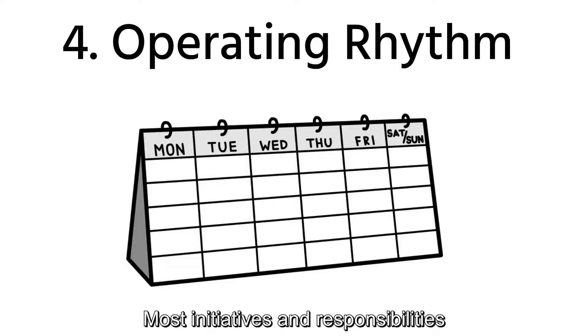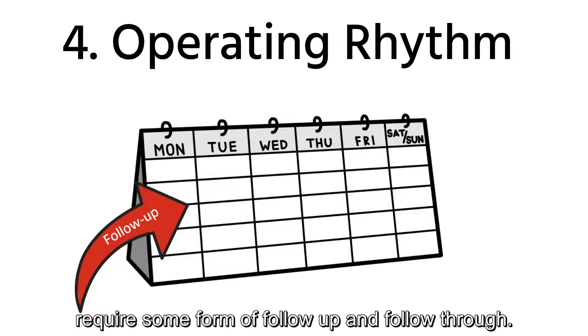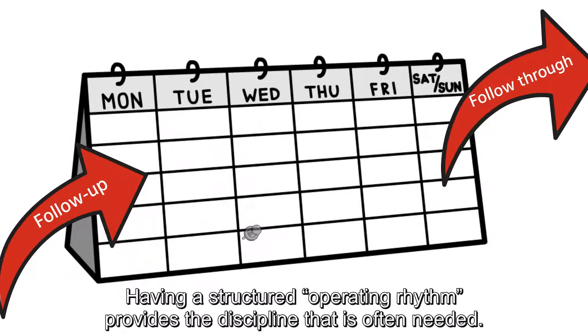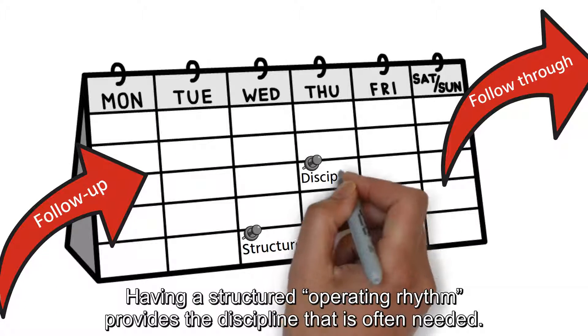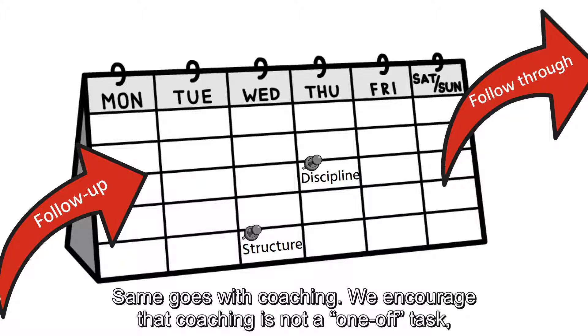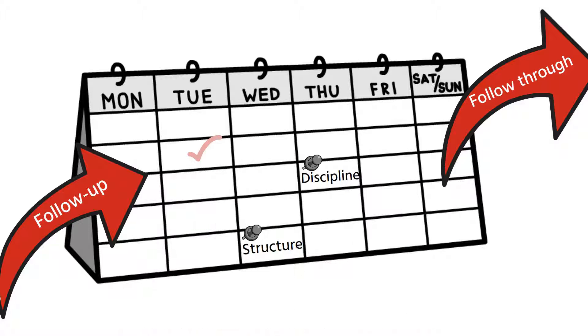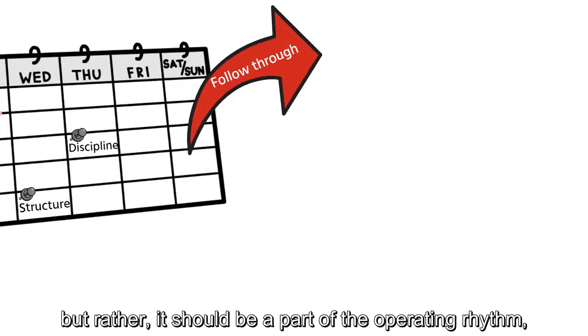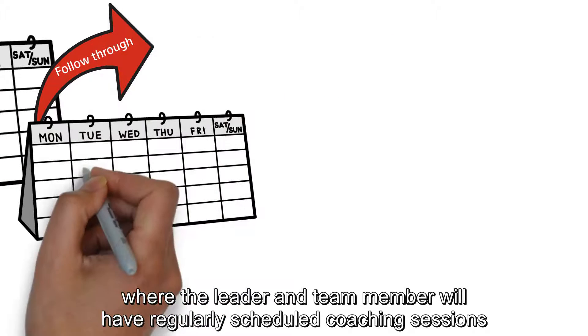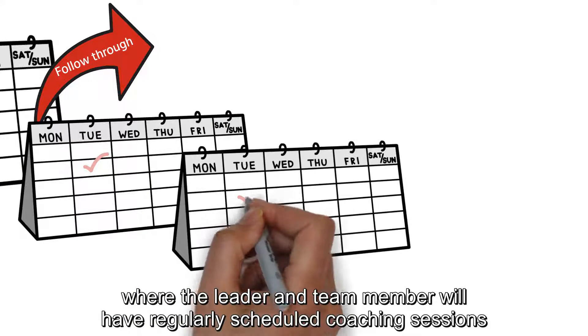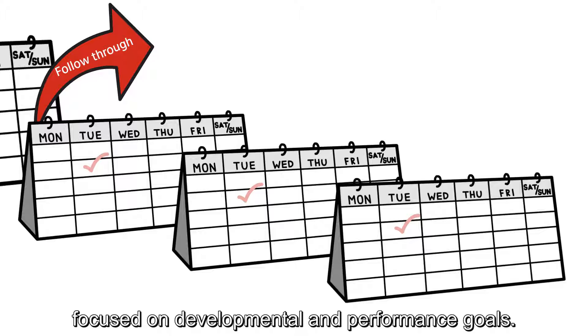OR is operating rhythm. Most initiatives and responsibilities require some form of follow-up and follow-through. Having a structured operating rhythm provides the discipline that is often needed. Same goes with coaching. We encourage that coaching is not a one-off task, but rather it should be part of the operating rhythm, where the leader and the team member will have regularly scheduled coaching sessions focused on developmental and performance goals.